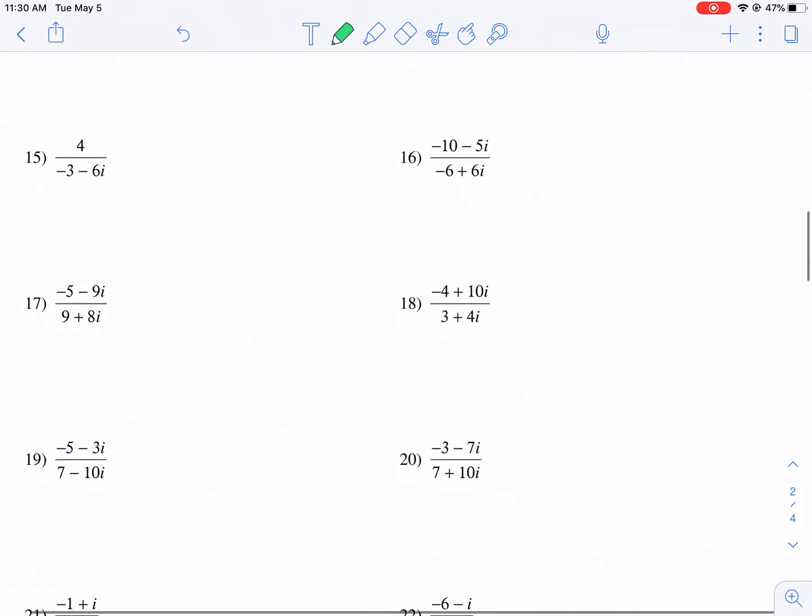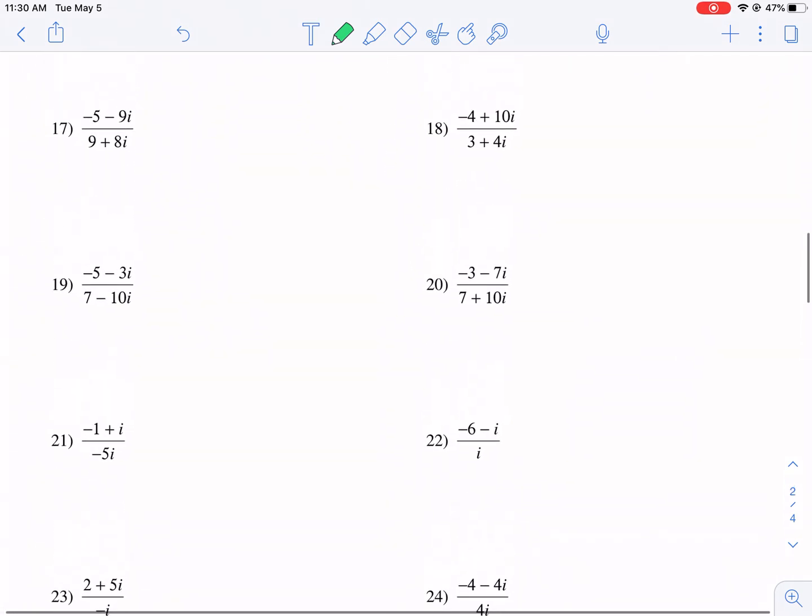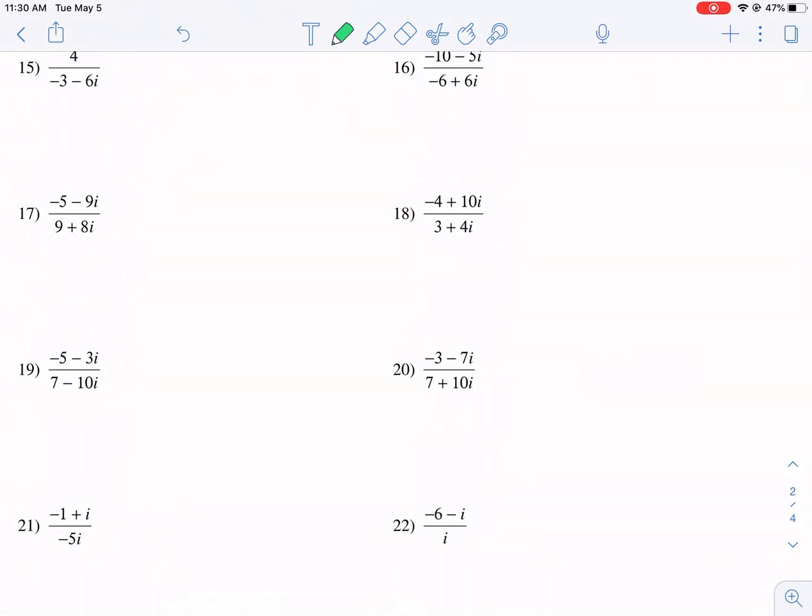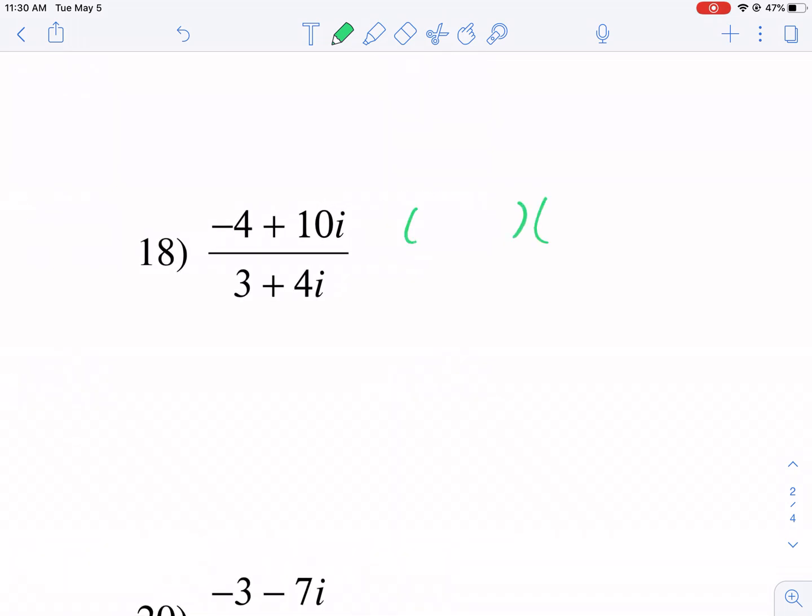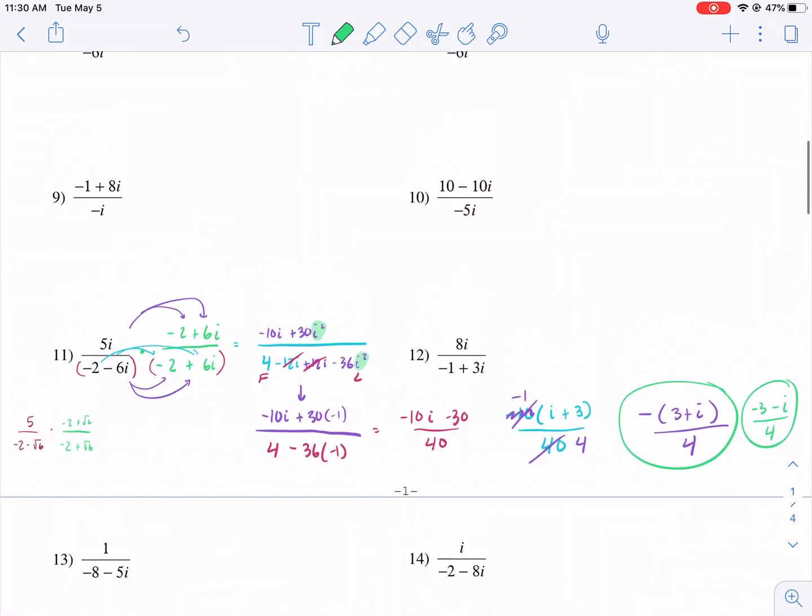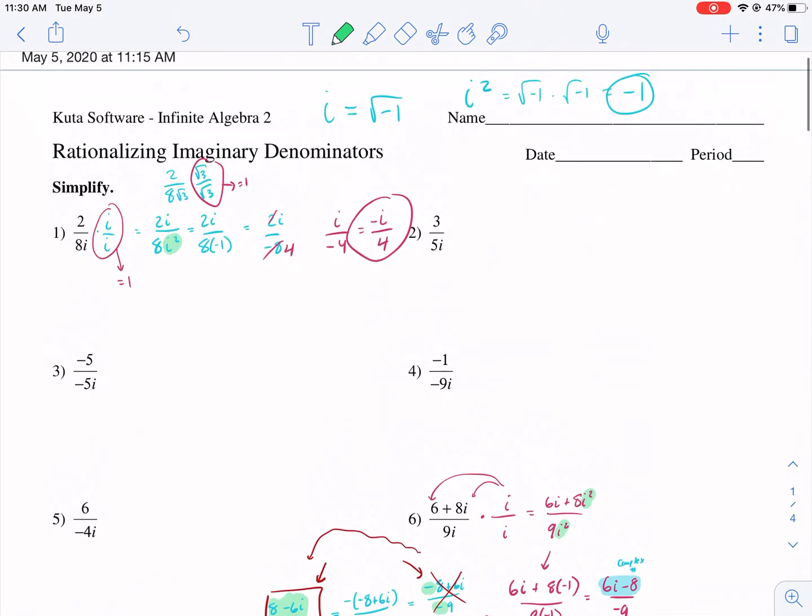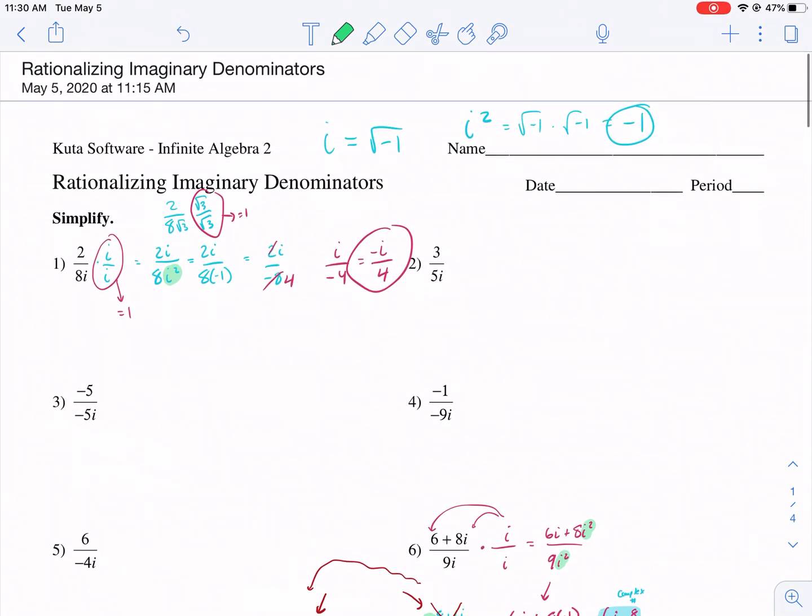All these other problems are identical to the ones we just did. The only difference is once we get to these problems, you're going to have to FOIL both the top and the bottom after you multiply by 3 minus 4i to the top and bottom. You're going to have to FOIL both the top and the bottom there. That's the only difference. But otherwise, you guys have all the tools you need to complete this worksheet. Hope you found this helpful. I'll see you next time on Wes Explains Best. Have a great day.